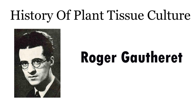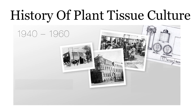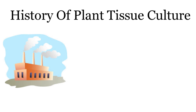Gottlieb Haberlandt, in 1934, obtained the first true plant tissue cultures from cambial tissue of Acer pseudoplatanus. He discovered the function of auxin as a plant growth regulator and the importance of vitamin B in plant growth. Subsequently, from the 1940s to 1960s, there was extensive development of new techniques and improvement of those already in use. The 1990s and early 21st century saw continued expansion in the application of in vitro technologies to an increasing number of plant species.